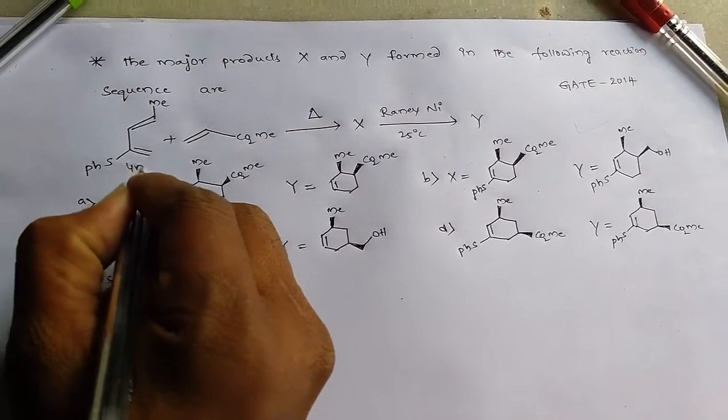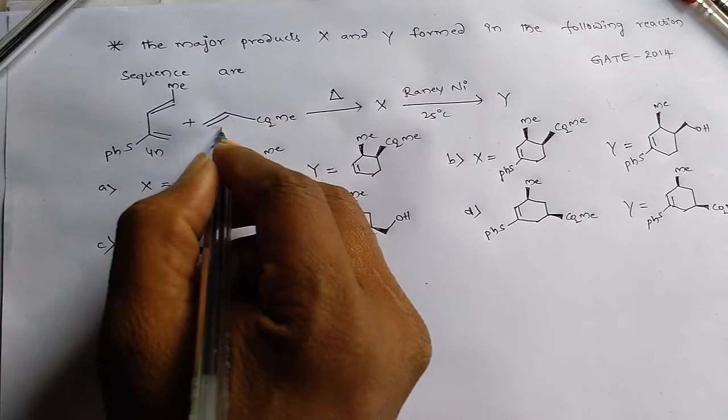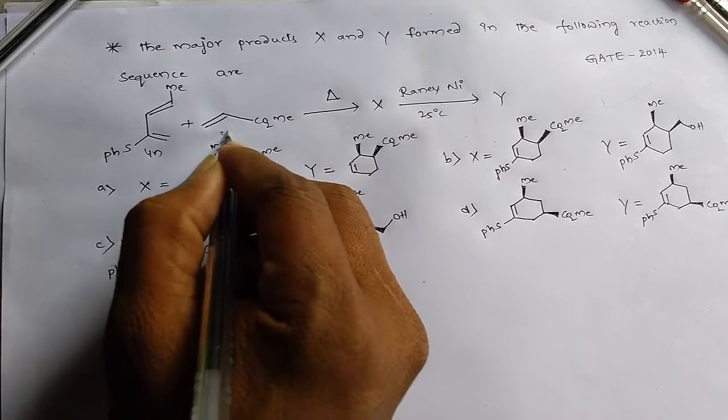This is diene, a 4π electron system, 4π electronic system. And this is dienophile, a 2π electronic system.